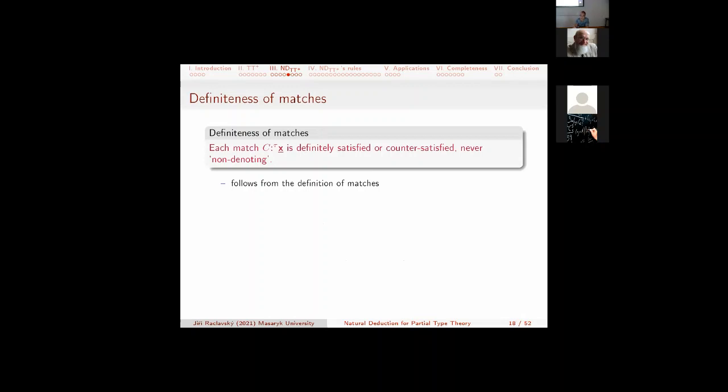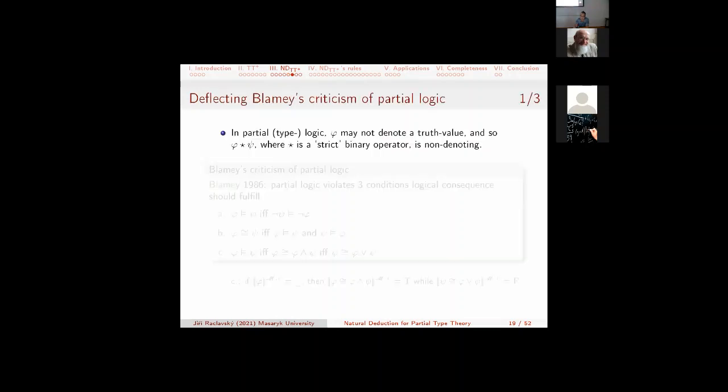We don't have types on the right-hand side of the double lot, but still the typing is present. Something which is also important is that labeling improves, increases deduction power, which is already known from Tableau method. And now, a very simple point with big influence. Each match is, by its definition, definitely satisfied or counter-satisfied. So, there are no non-denoting matches. If you rephrase matches as constructions, they are constructions of truth values, but they are never improper constructions. Now, why it's important?